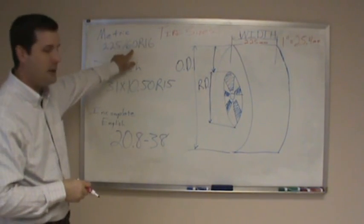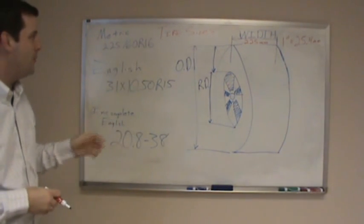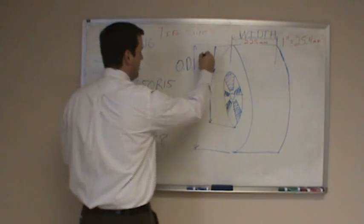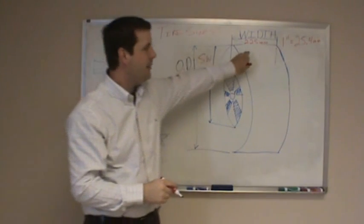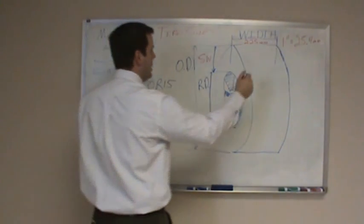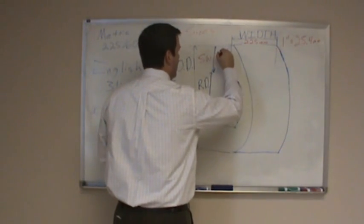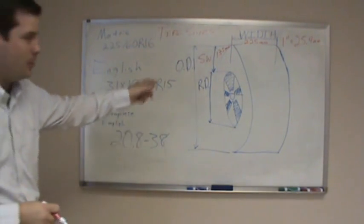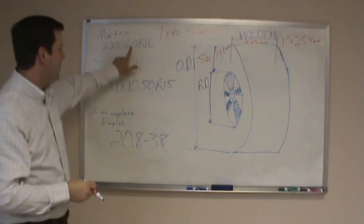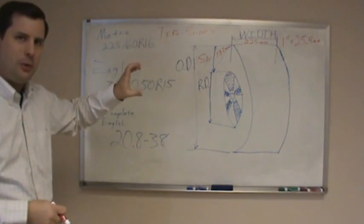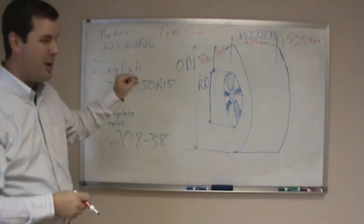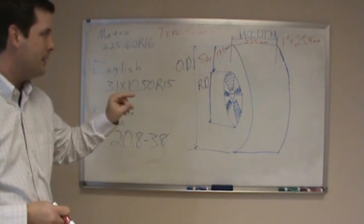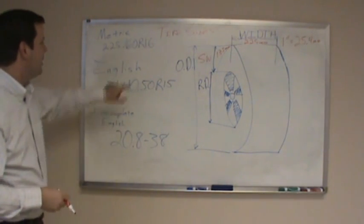The 60 is an aspect ratio, also called a series or a profile. What the 60 means is that the sidewall is 60% of the width — in this case, the sidewall is about 135 millimeters. It's the same measurement all the way around the tire. The bigger this number is, the more cushiony feel the tire will have, and the smaller the number, the more of a performance feel — you'll definitely feel the road as that profile gets smaller and smaller.